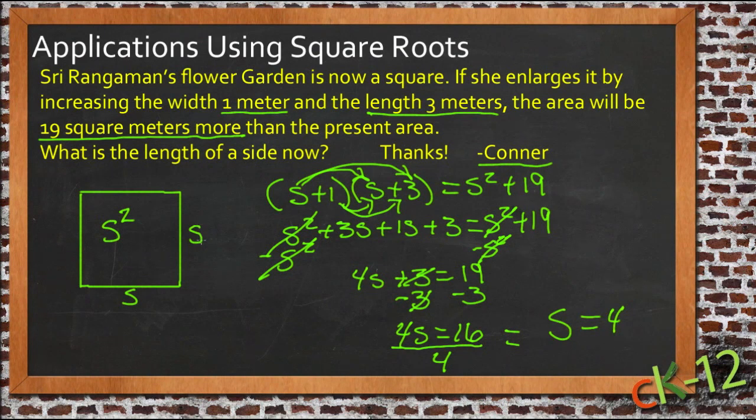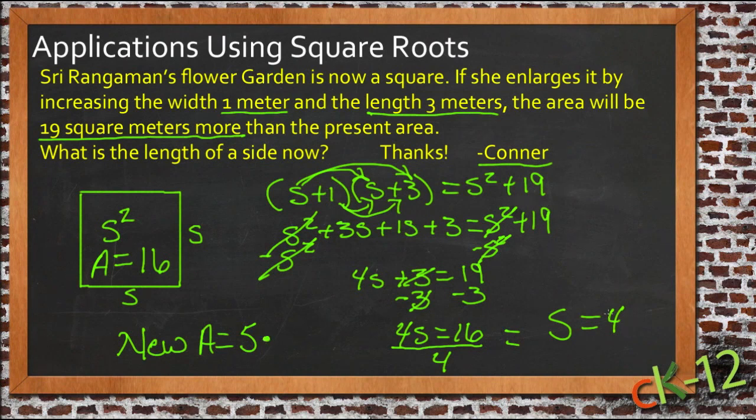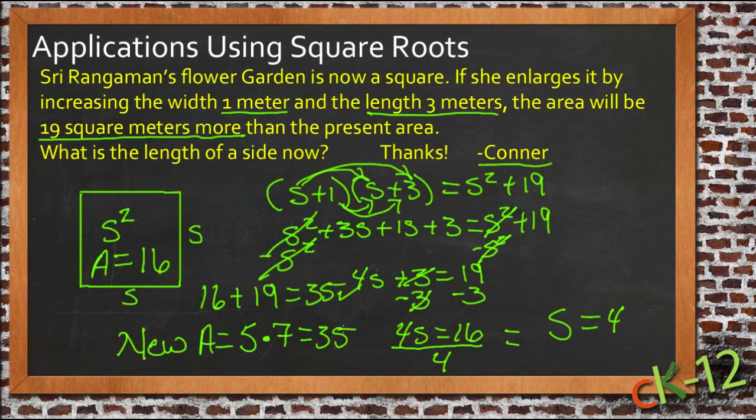So that tells us that your original sides would have been 4, which means that the area of your original square would have been 4 squared, or 16. Now if this is going to work, the new one should be 16 plus 19. So let's see what happens. If we have 4 plus 1, that's 5, so the new area would be 5 times 4 plus 3, so 7, which is 35. And 16 plus 19 equals 35, so that works. So there's your answer. Your original side would have been 4 units.